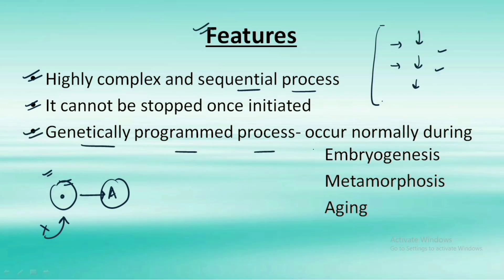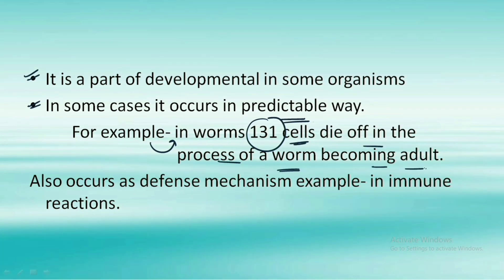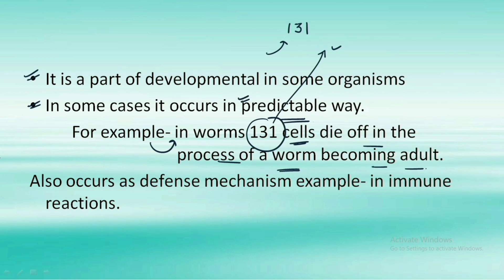The third feature is that apoptosis is a genetically programmed process and occurs normally during embryogenesis, metamorphosis, and aging. It is part of a developmental program in some organisms and can occur in a predictable manner. For example, in worms almost 131 cells die off in the process of a worm becoming an adult. The last point is that apoptosis also occurs as a defense mechanism, for example in immune reactions.